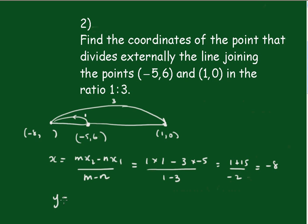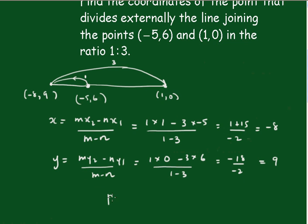The y value is m*y2 minus n*y1 over m minus n, which is 1 times the 0 minus 3 times the 6 over 1 minus 3, which is minus 18 over negative 2, which is positive 9. And that's your final result. The point is (-8, 9).